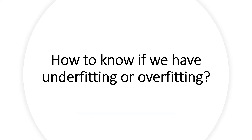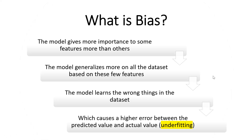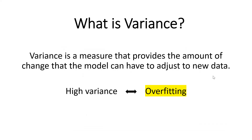So the question is: how do we know if we have underfitting or overfitting? To answer that, there are two things to understand. The first one is bias. Bias occurs when the model gives more importance to some features over others, which means the model will generalize based on these few features. As a consequence, the model learns the wrong things in the dataset, causing a higher error between the predicted value and the actual value. This is known as underfitting.